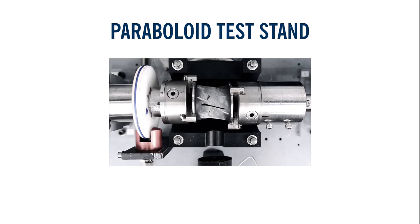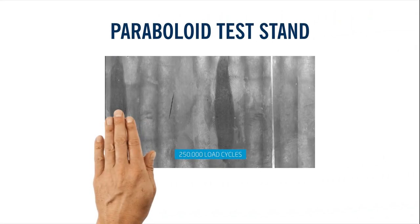For example, at the paraboloid test bench, the highest elongations occur on the surface of the smallest cross section. Cracks occur after time due to the dynamic load.